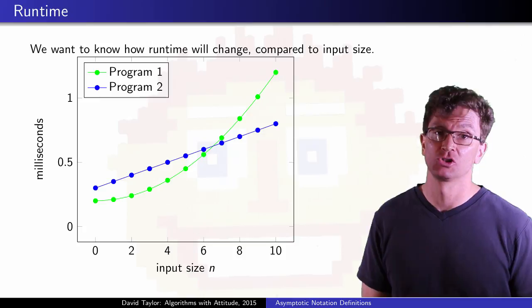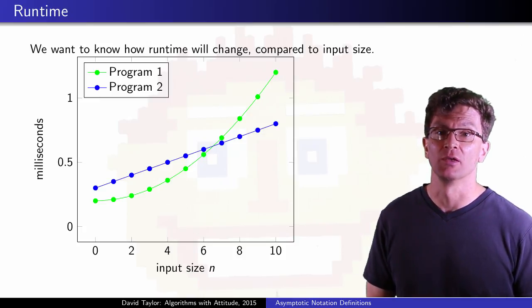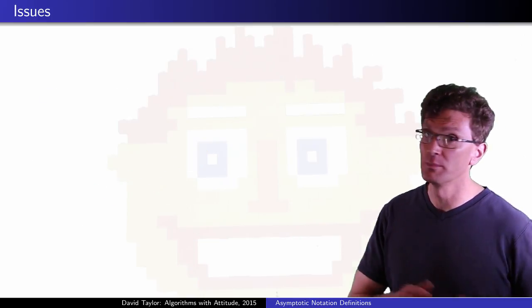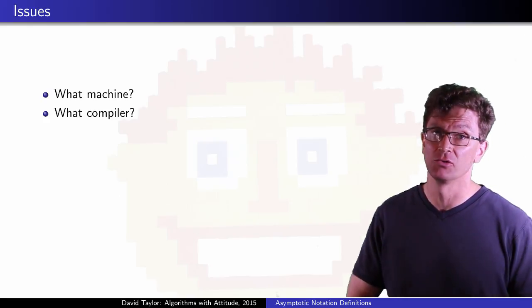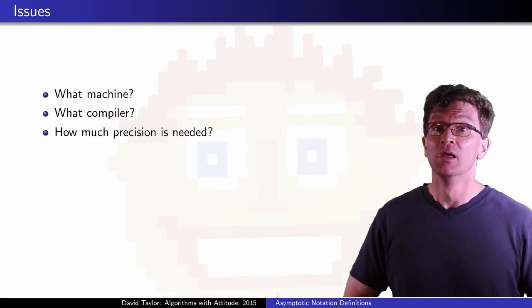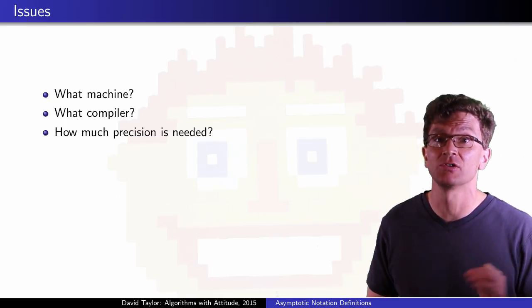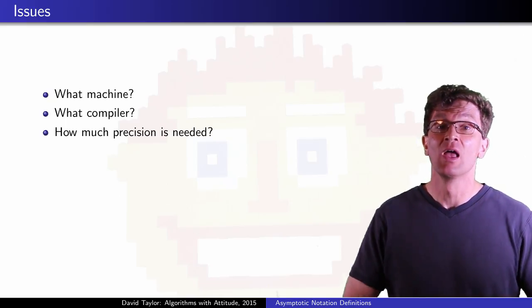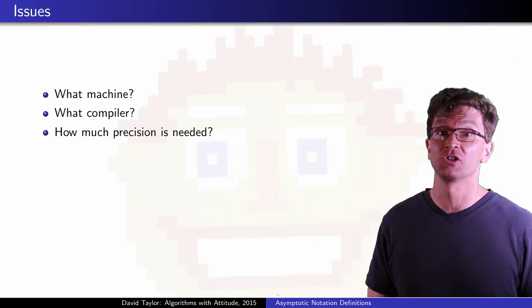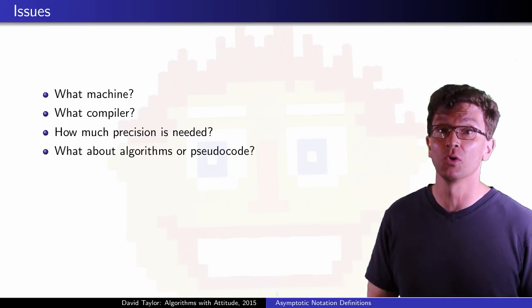We want to know how runtime will change compared to input size. There are some issues here: What machine are you running on? What compiler are you using? How much precision do you need? These issues make discussing runtime a real pain, and the asymptotic notation is going to let us get past these and also allow us to talk about the efficiency of algorithms or pseudocode.